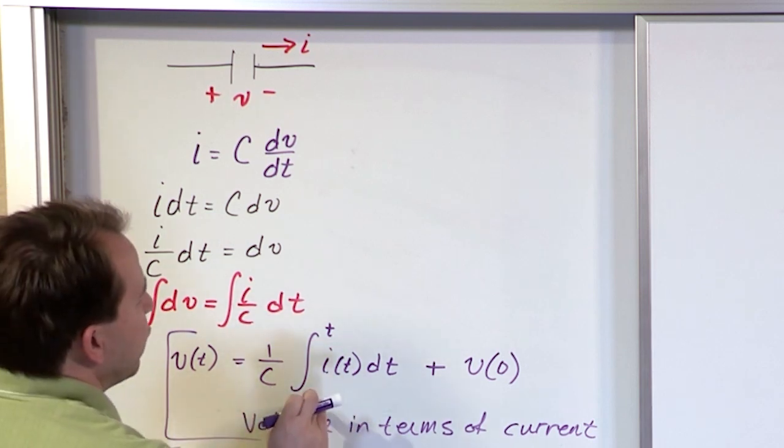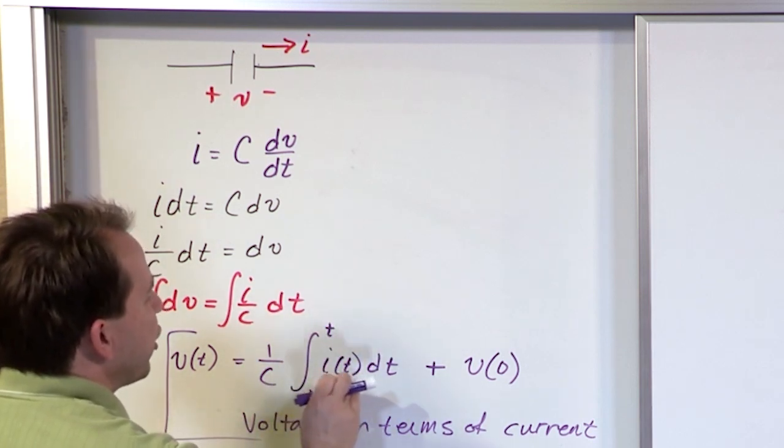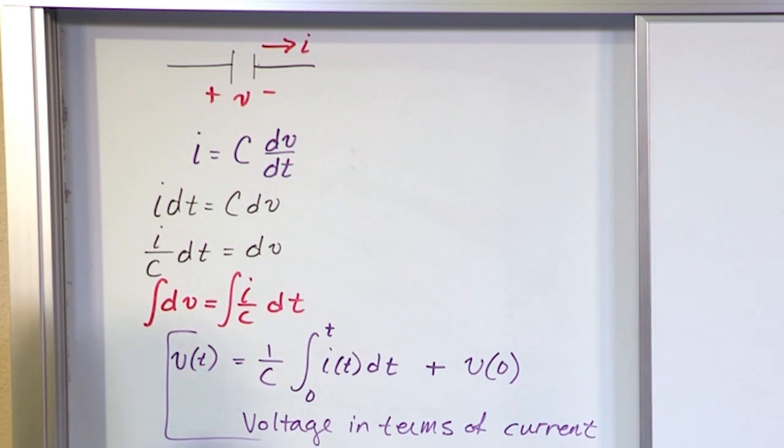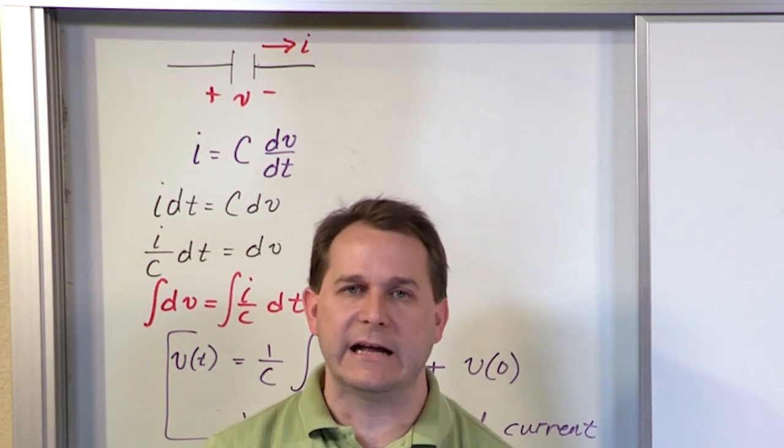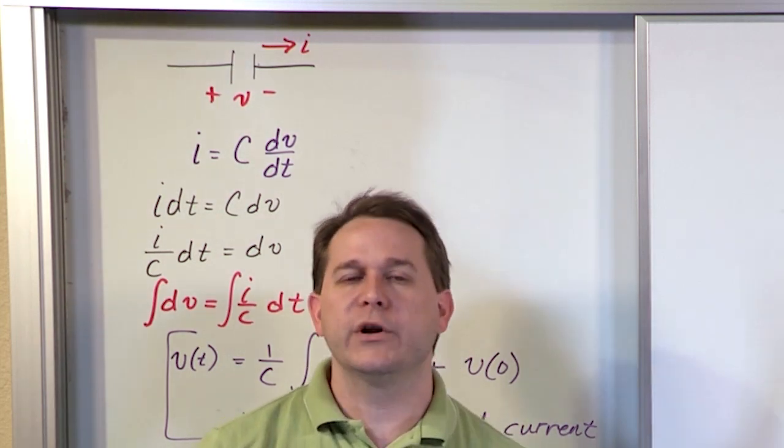So really what you're doing is this integral is adding up the current as a function of time. Remember back to the units of current, right? An ampere is a coulomb per second. That's charge flowing. That's what current is.